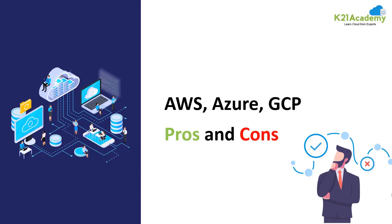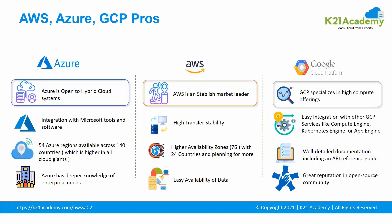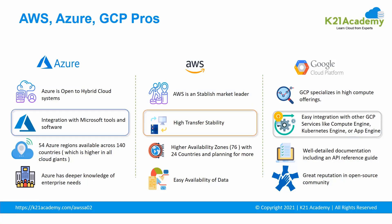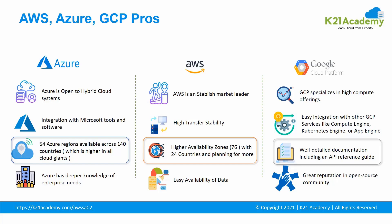Now let's discuss the pros and cons of AWS, Azure and GCP. In terms of pros: Microsoft Azure is the strongest competitor of AWS and GCP — it offers substantial support for hybrid cloud applications and helps companies protect sensitive client data. AWS is an established market leader with the maximum market share compared to other cloud vendors. GCP specializes in high-compute offerings like big data, analytics and machine learning, and also offers considerable scale and load balancing. Google's expertise in data centers means fast response times. Azure has great integration with its respective tools and software.